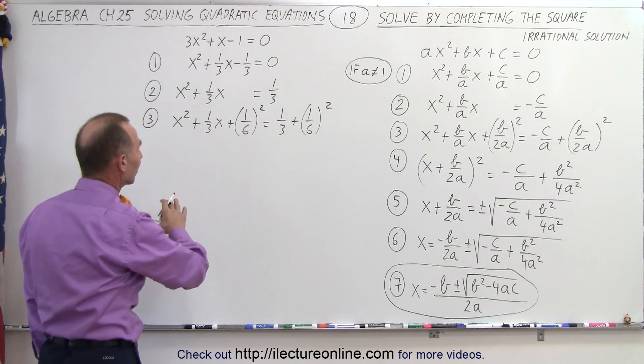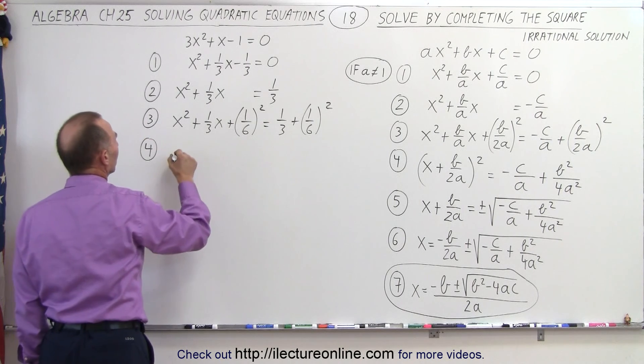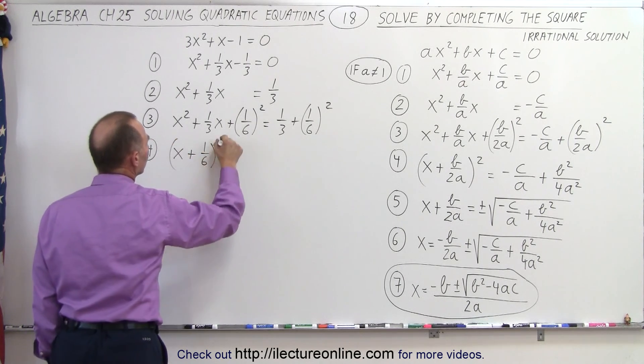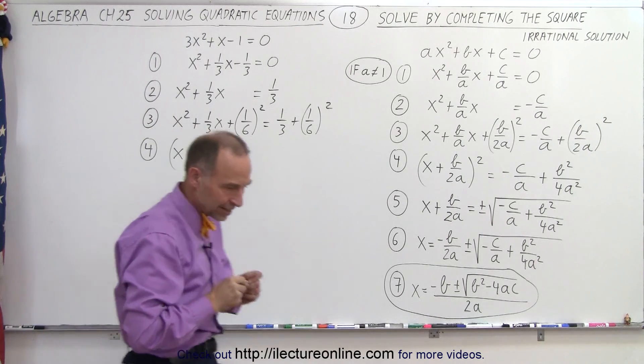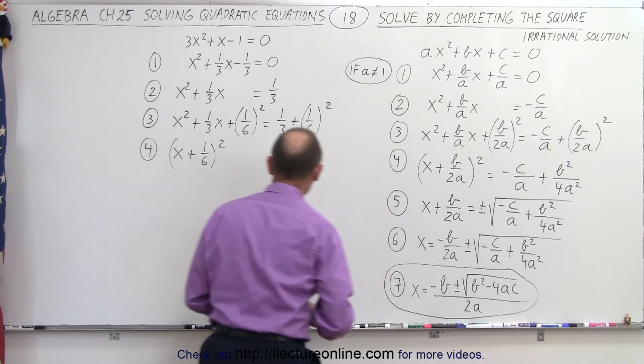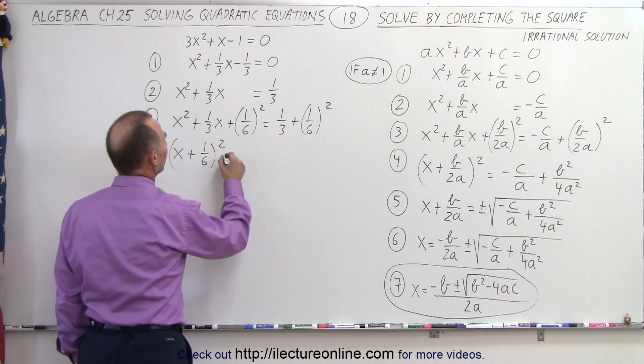So now we can go ahead and factor the left side and clean up the right side a little bit. So step number 4, we can write this as x plus 1 over 6 quantity squared.